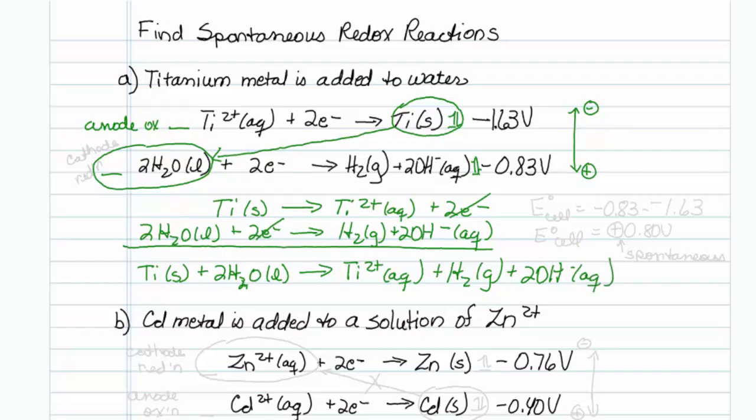Now if you're not sure about this downhill method, remember I have chosen my titanium to be the anode and oxidized. I have chosen my water to be my cathode and for reduction to occur.